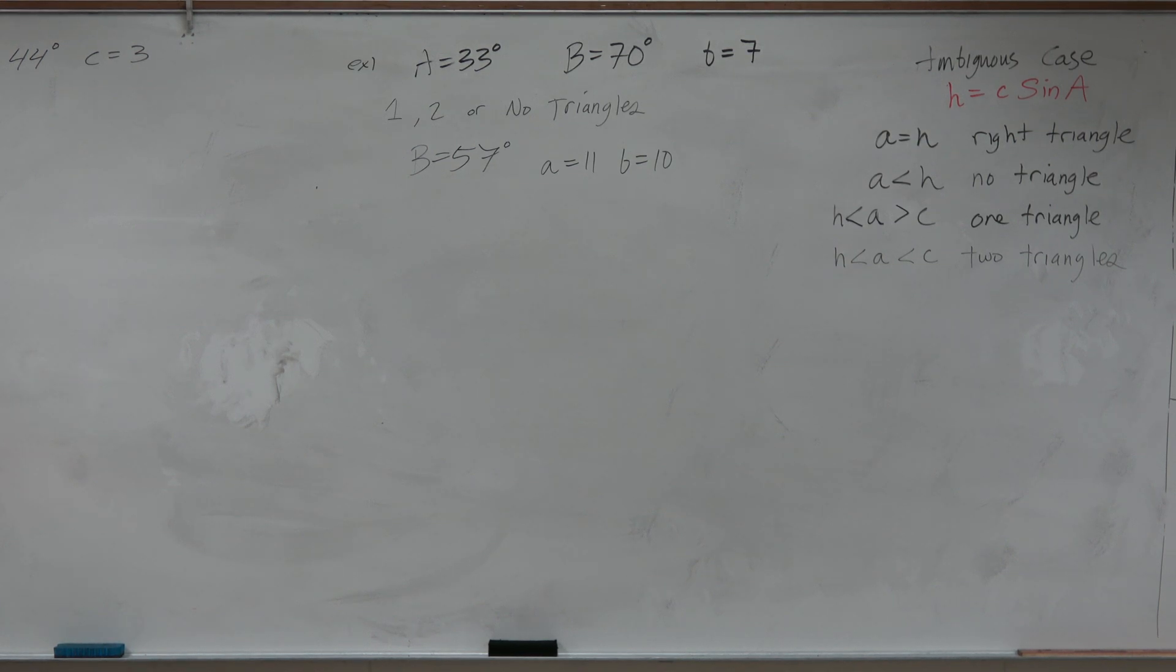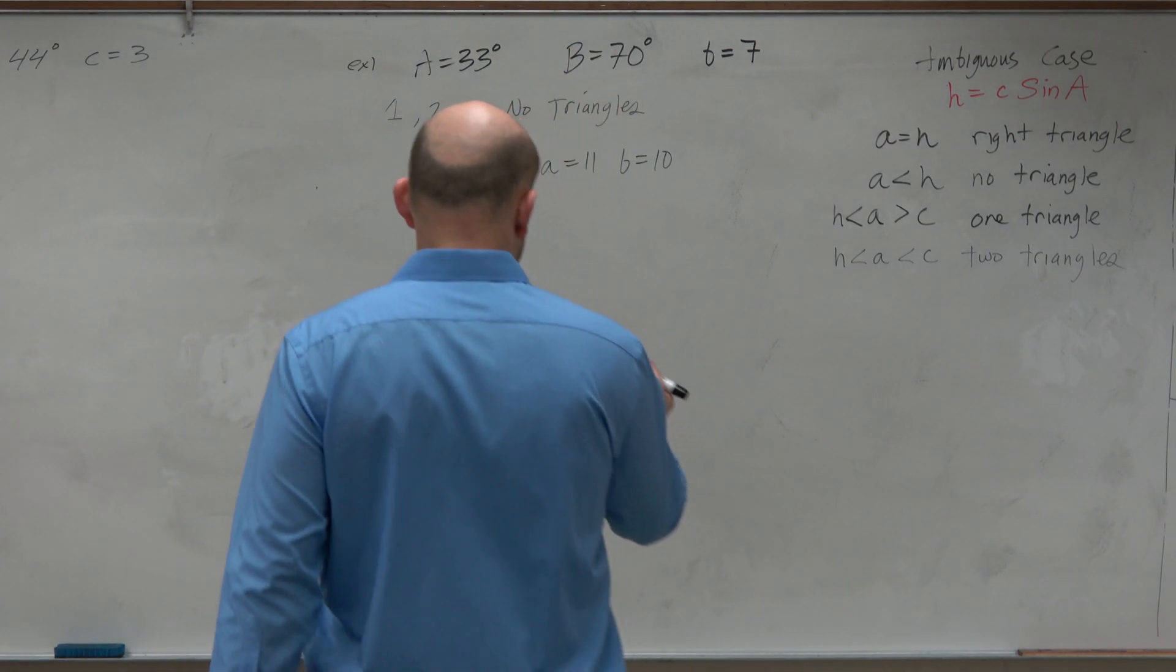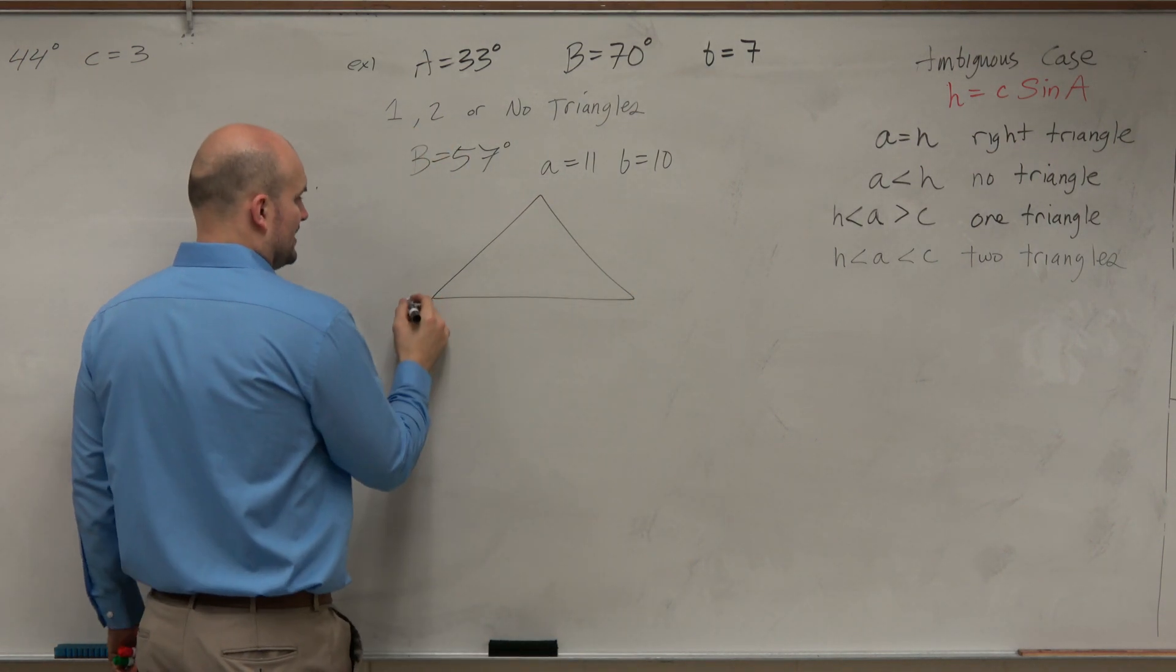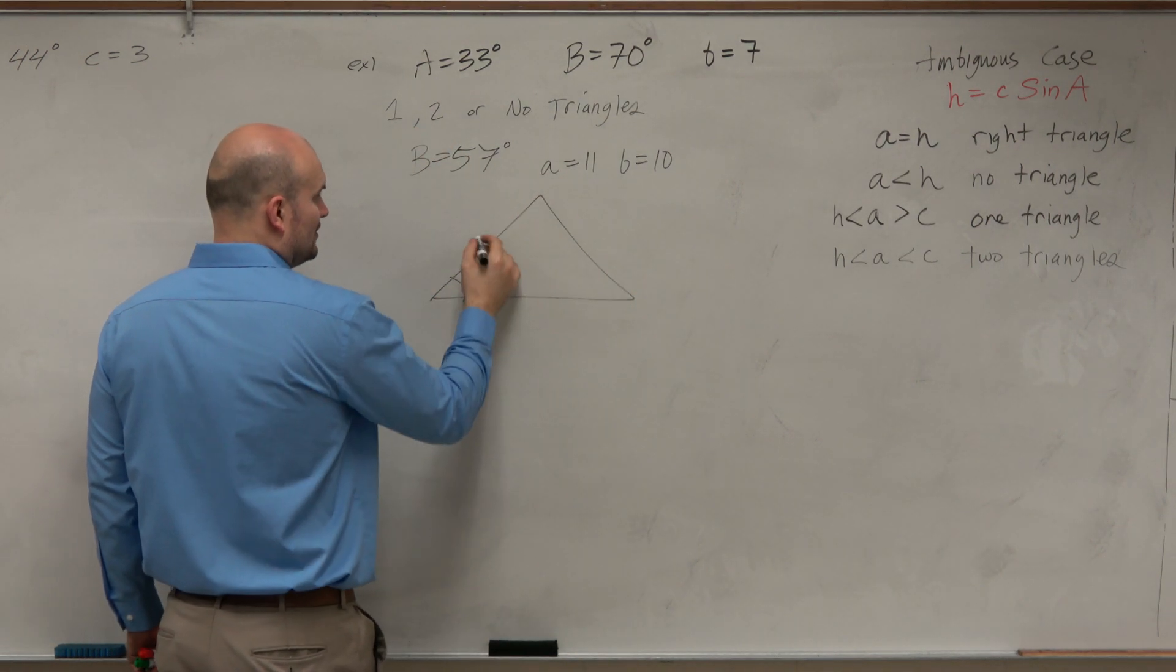This one, if we want to identify, again, same kind of thing. If we want to create one, two, or no triangles. So again, we want this to be angle, side, side.